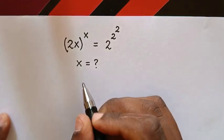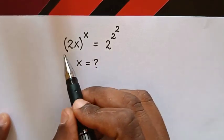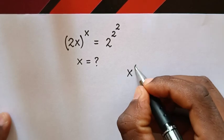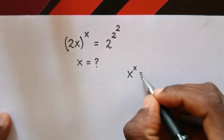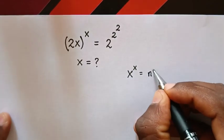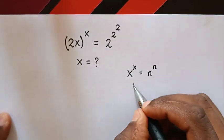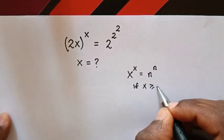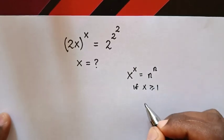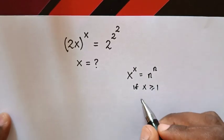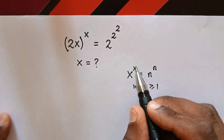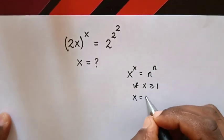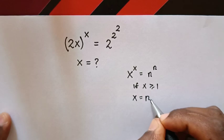From this question, we will apply the rule which is x power x is equals to n power n. So if x is greater than or equals to 1, it means when we compare the bases and the powers, x is equals to n.